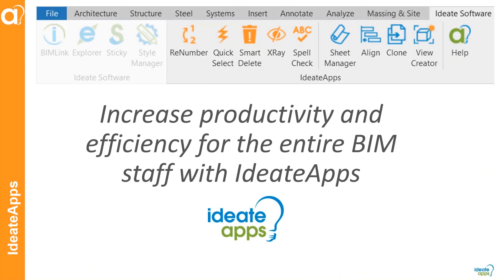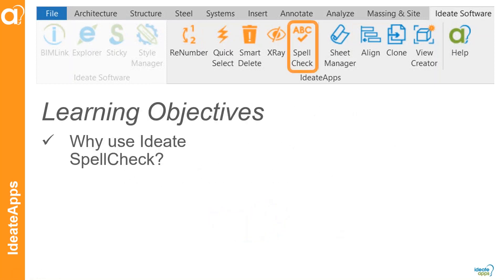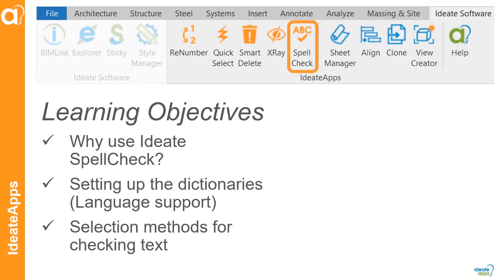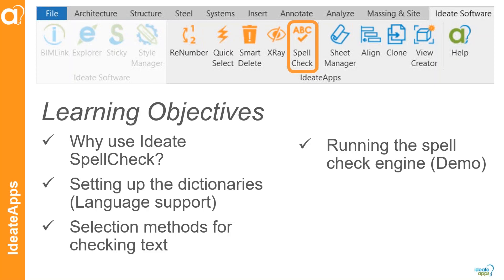ID8 Apps is a collection of nine productivity and efficiency tools for all Revit users. Within our nine tools of ID8 Apps, there is a tool called ID8 Spellcheck. I'm going to talk about setting up the different dictionaries and language support that goes above and beyond what's available in Revit, the different selection methods for checking the text, and then run a little demo of the three different ways, plus tips and tricks.